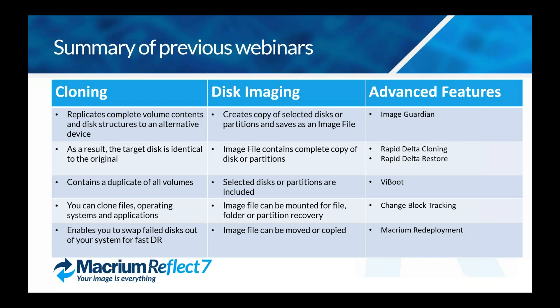We went over disk imaging — it creates a direct copy of disks and partitions and saves it as an image file, containing a complete copy including system partitions. These image files can be mounted for file and folder recovery and moved around for other recovery needs. We also covered advanced features such as Image Guardian for ransomware protection, Rapid Delta Cloning, Rapid Delta Restore, viBoot — the ability to boot an image into a virtual interface for fast DR — Change Block Tracking, and Macrium Redeploy for deploying images to dissimilar hardware.